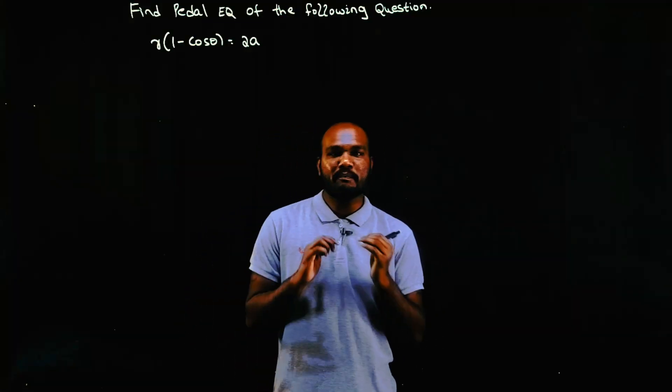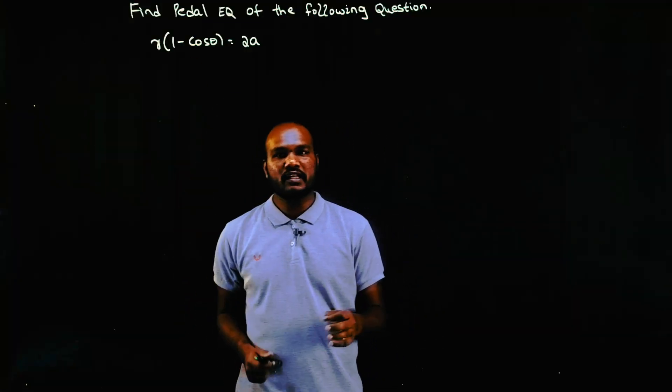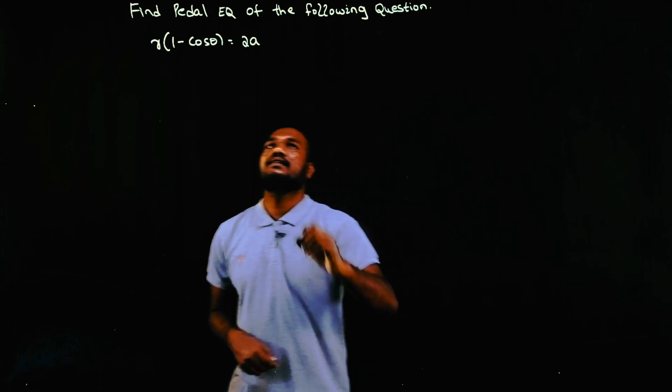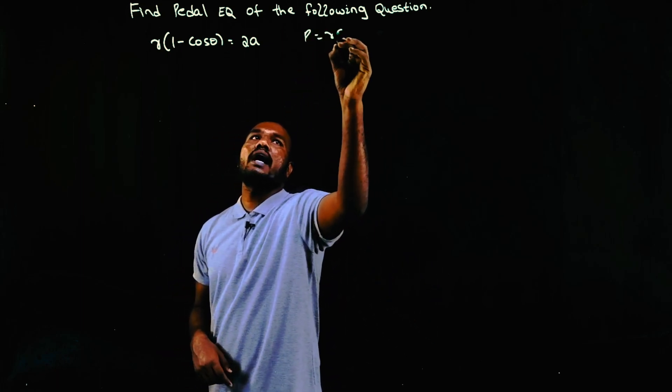Hey guys, welcome to another video. In this video series we are solving 2021 scheme M1 questions from the first module: polar curves. Make sure to subscribe for more videos like this one. What is given in the question? We have to find the pedal equation for the following question. The pedal equation is an equation where there is no theta, that is p = r sin φ. To find the pedal equation, we need the phi value.